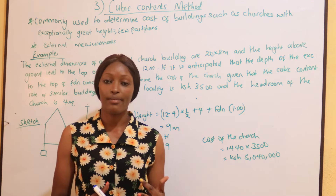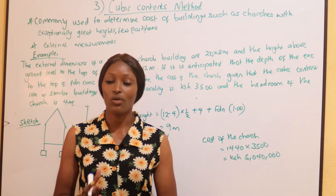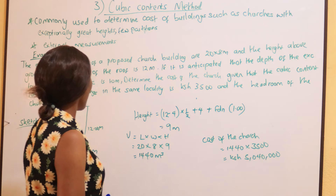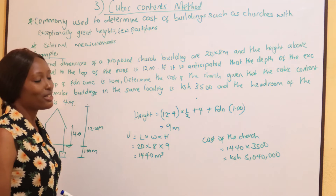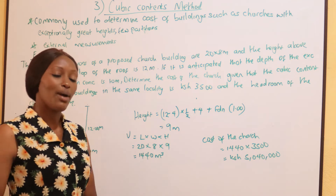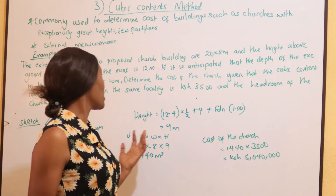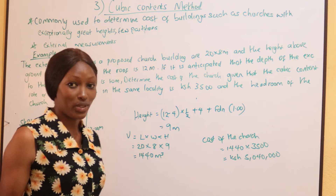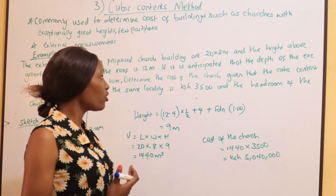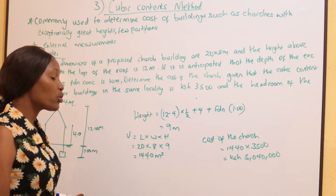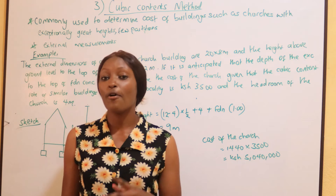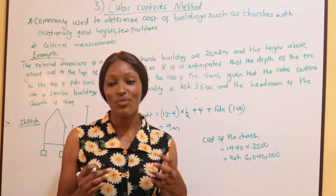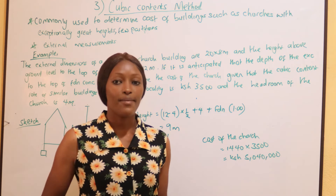The cubic content method is commonly used to determine the cost of buildings such as churches and cinema halls, which have unique features such as exceptionally great heights or few partitions. For the cubic content method, we usually use external measurements. Remember, the floor area method uses internal dimensions, but the cubic content method uses external dimensions.